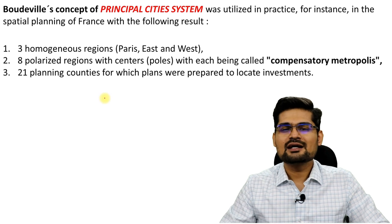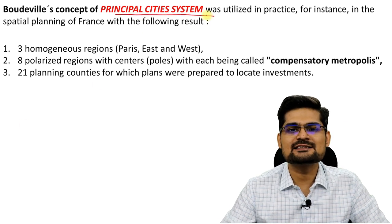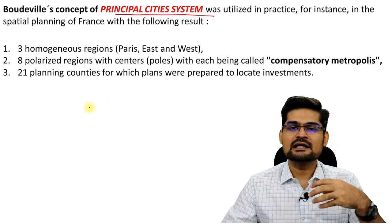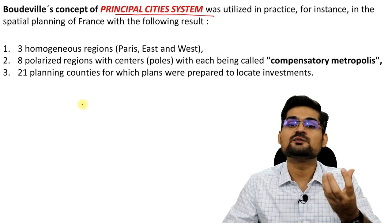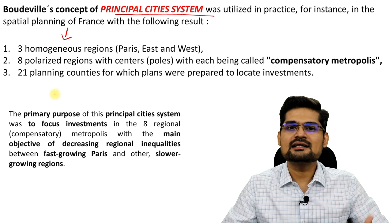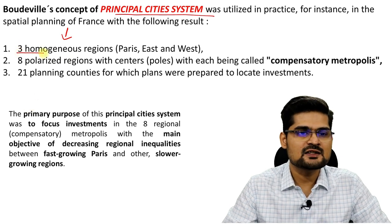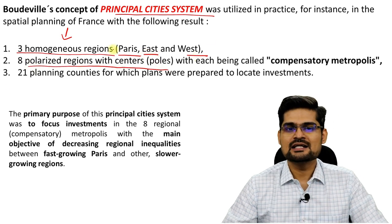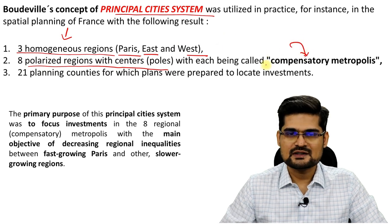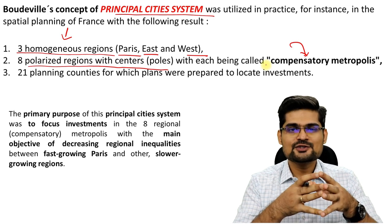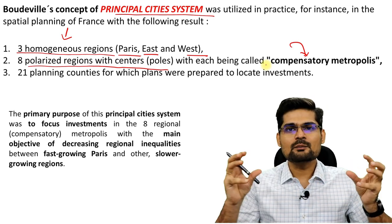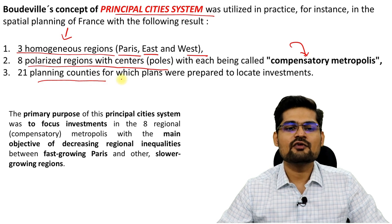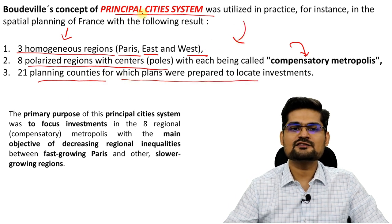The next concept from Boudeville in the 1960s is the principal cities system, based on his work on Paris. His Paris work was very important in giving an idea of the growth center and growth pole theory approach. He divided his study of France into three homogeneous regions — Paris, East, and West France — and eight polarized regions with centers which are growth poles called compensatory metropolis. The compensatory metropolis — compensation meaning alternative newer points of development — and 21 planning counties for which plans were prepared. These were the principal city blocks and growth centers of France to be studied.